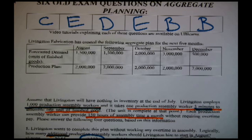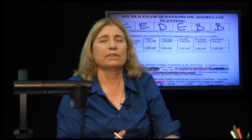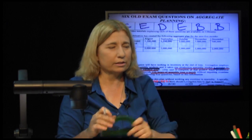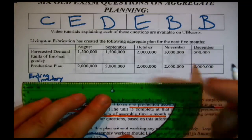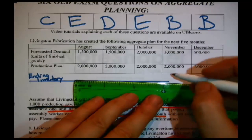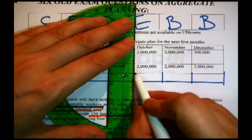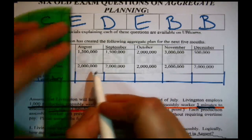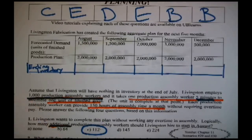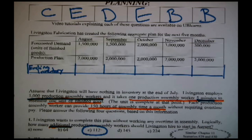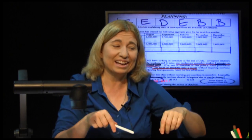The next questions are about inventory — ending inventory level in October, average inventory level, and then something about inventory costing money. They've given us a plan and are asking various things about inventory. The best thing to do in aggregate planning — it's all about staying organized — is to go ahead and expand the table and figure out the inventory levels for the whole plan, then go back and answer the specific questions.